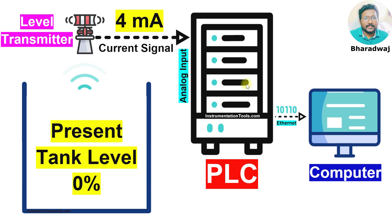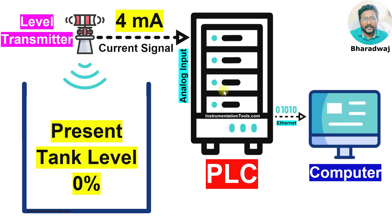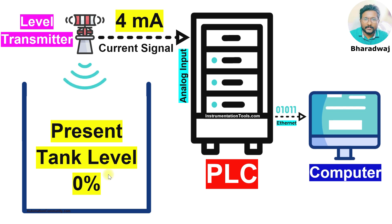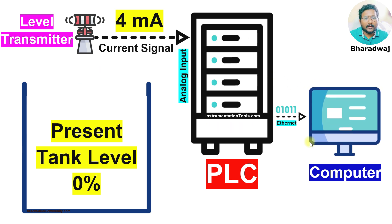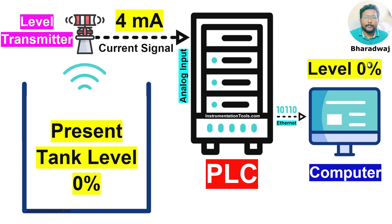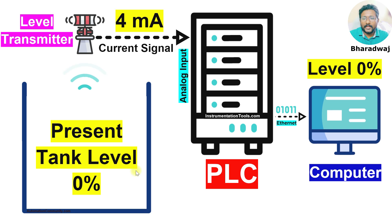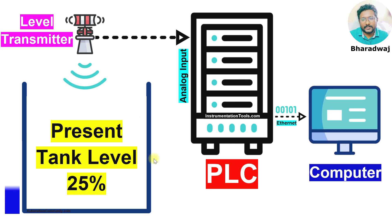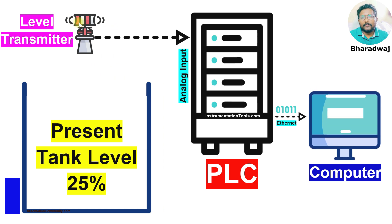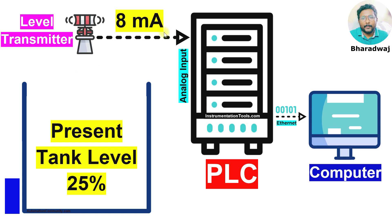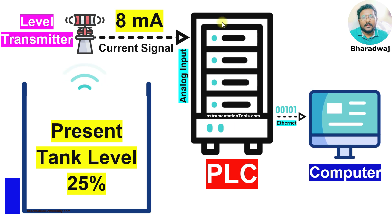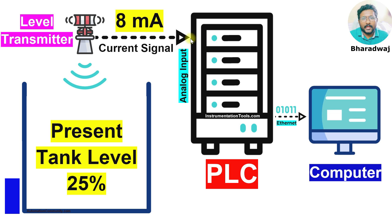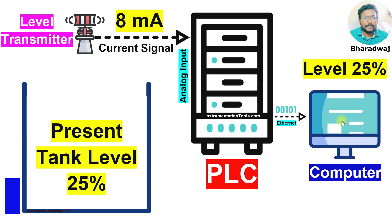The PLC receives the 4 mA signal and calculates the tank level. Finally, it updates the tank level on the computer graphics — the level is 0%. Now if the tank level is 25%, the transmitter sends 8 mA to the PLC. The PLC receives this current signal, calculates the tank level as 25%, and displays it on the computer.